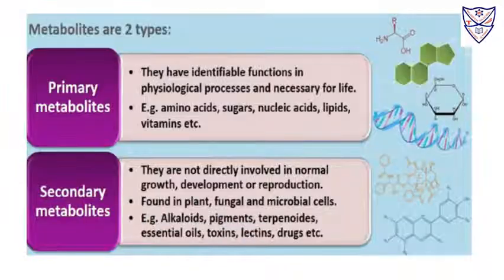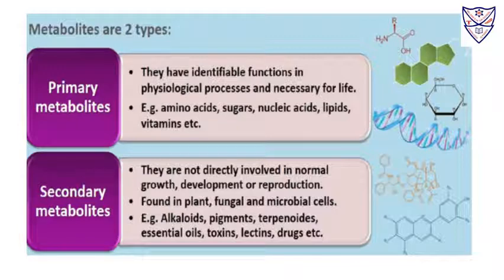Based on metabolism, we have two types of metabolites: primary and secondary. Primary metabolites are those which are essential for life. They are necessary for life — like amino acids, sugars, nucleic acids, and lipids. All these are essential for life.